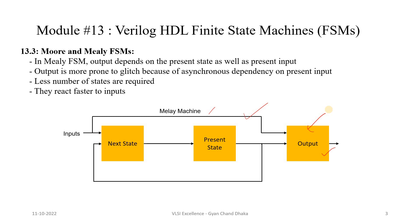We will understand this using a good example, designing the logic using both Moore FSM and Mealy FSM, where we will see how the number of states differs. For now, remember that Mealy FSM requires fewer states than Moore FSM, and because the output also depends on inputs, Mealy FSM reacts faster to inputs.